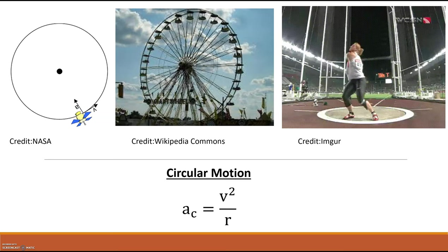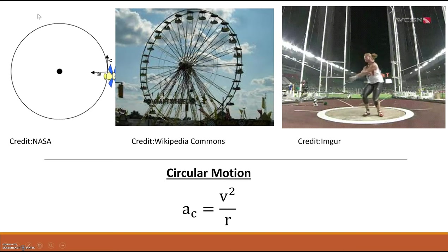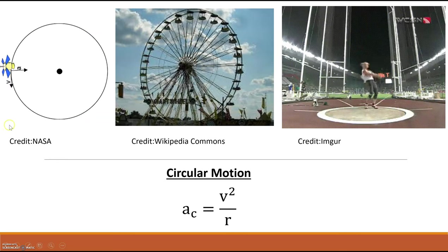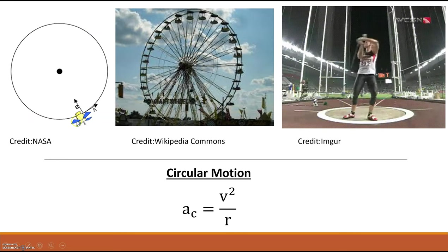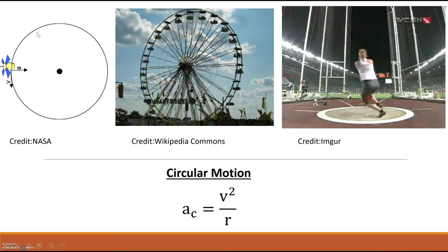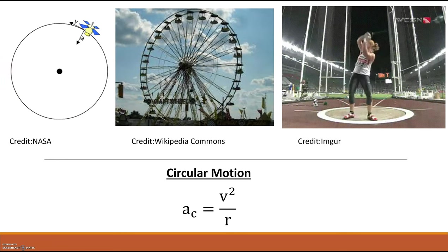The other type of motion that we're going to be looking at and forces that we're going to be looking at is the concepts around circular motion. With circular motion, the acceleration is always pointing towards the center of the circular motion. The velocity is always going to be tangent to the direction of the acceleration, which is pointing inwards. We have circular motion all around us.